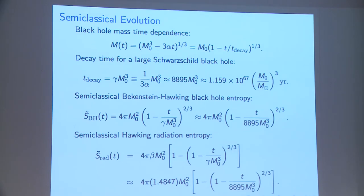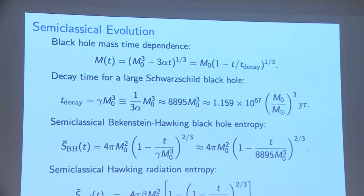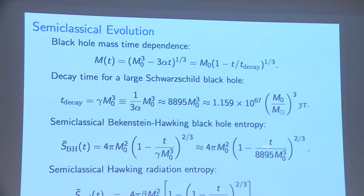For the semi-classical evolution in four dimensions, the lifetime goes as M cubed. The mass as a function of time goes like that, and the decay time in Planck units is almost 9,000 times the cube of the mass. In solar masses, that's 10 to the 67 years for a solar mass, and 10 to the 70 years for a 10 solar mass black hole. The semi-classical Bekenstein-Hawking entropy has this time dependence, while the radiation entropy has a different form due to the extra factor from barrier scattering.